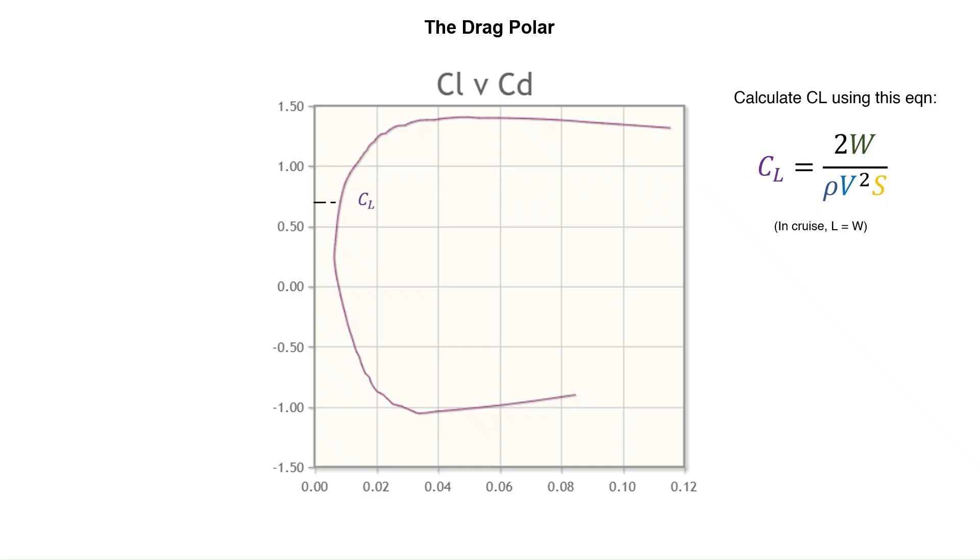This CD is only the parasitic drag and does not include the induced drag. That's because induced drag depends on the span and planform shape of the wing and not on the airfoil.